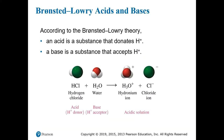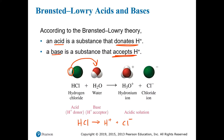So according to the Bronsted-Lowry theory, an acid is a substance that donates hydrogen ions or donates protons, and a base is a substance that accepts hydrogen ions or accepts protons. Here we can see the example of hydrochloric acid. According to the Arrhenius definition, hydrochloric acid simply breaks down into hydrogen ions and chloride ions. The Bronsted-Lowry theory takes this a little bit further, and it says that HCl doesn't simply dissociate in water, but it takes its hydrogen and donates it to the water molecule. Since hydrochloric acid is donating a proton, it's the acid, and since water is accepting a proton, it's a base.